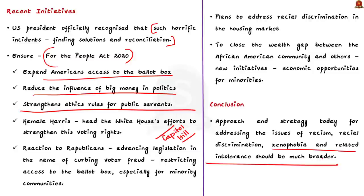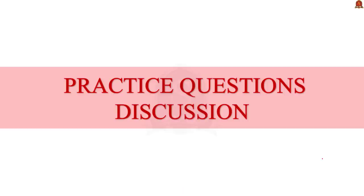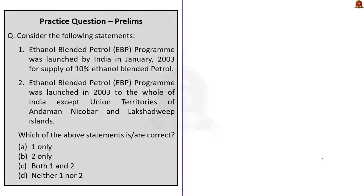With this we have come to the end of the Tulsa topic discussion. Now let's move on to the prelims practice questions. Regarding ethanol blending — Statement 1 says the ethanol blended petrol program was launched in 2003 to the whole of India except union territories of Andaman, Nicobar and Lakshadweep Islands. Both statements are incorrect: the program was launched for 5% blending, not 10%, making Statement 1 incorrect; and it was launched in only 9 states and 4 union territories, not the whole of India. The correct answer is option D — neither 1 nor 2.